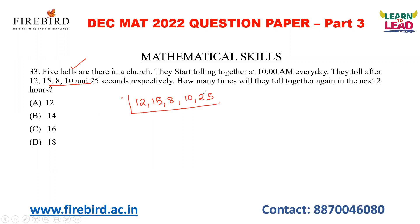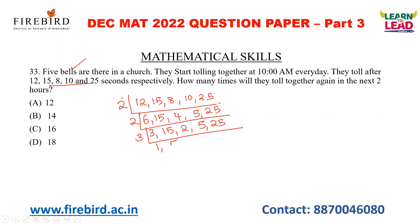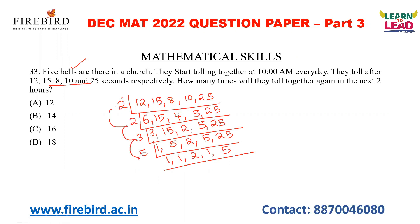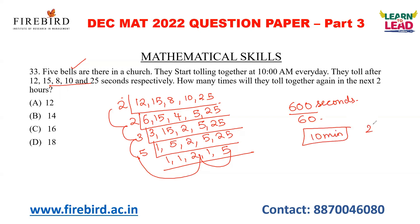It should be a multiple of 25. Going by the normal method: divide by 2 to get 6, 15, 4, 5, 25; divide by 2 again to get 3, 15, 2, 5, 25; divide by 3 to get 1, 5, 2, 5, 25; divide by 5 to get 1, 1, 2, 1, 5. Now multiply everything: 2 × 2 = 4; 4 × 3 = 12; 12 × 5 = 60; 60 × 2 = 120; 120 × 5 = 600. That is 600 seconds before all bells toll together. Converting to minutes: 600 ÷ 60 = 10 minutes. So every 10 minutes all the bells toll together. In 2 hours, all the bells toll together 12 times — that is your answer.